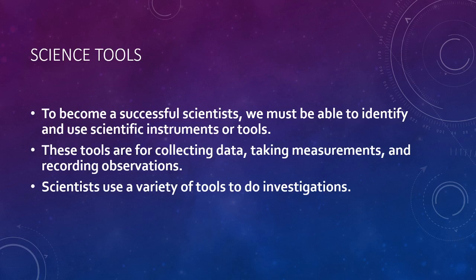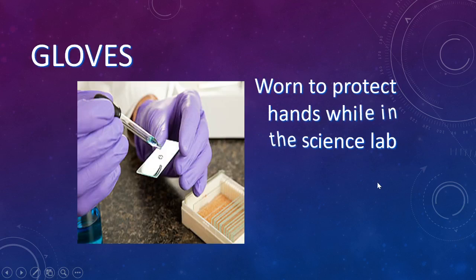So some of our safety equipment: the first one is gloves. These are worn to protect your hands while in the science lab. You would use these if you're doing a dissection or working with really dangerous chemicals that could harm your skin.